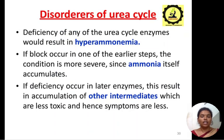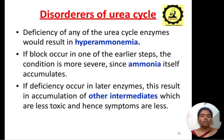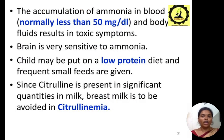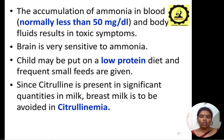Due to defects in the urea cycle, different types of disorders occur. Deficiency of any of the urea cycle enzymes would result in hyperammonemia. If a block occurs in one of the earlier steps, the condition is more severe since ammonia itself accumulates. If deficiency occurs in later enzymes, this results in accumulation of other intermediates, which are less toxic, and symptoms are less severe. The accumulation of ammonia in blood — normally less than 50 micrograms per dL — in body fluids results in toxic symptoms. The brain is very sensitive to ammonia. A child may be put on a low protein diet and given frequent small feeds. Since citrulline is present in significant quantity in milk, breast milk is to be avoided in citrullinemia.